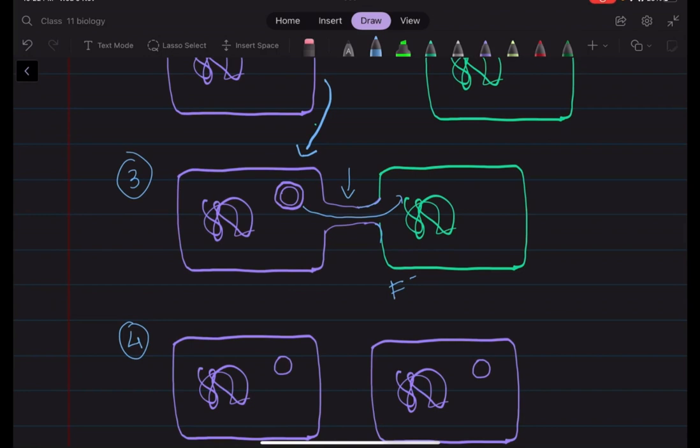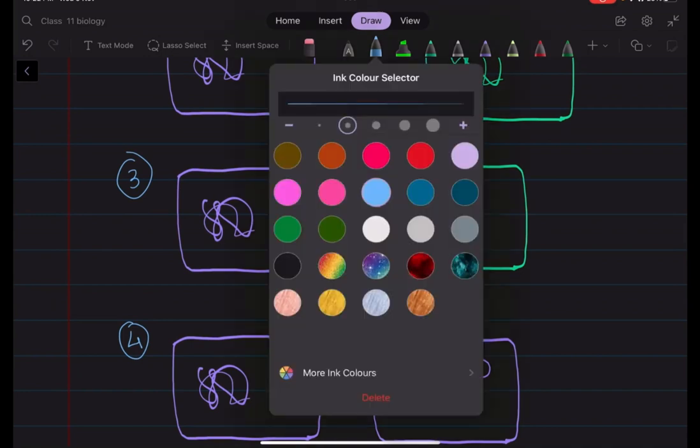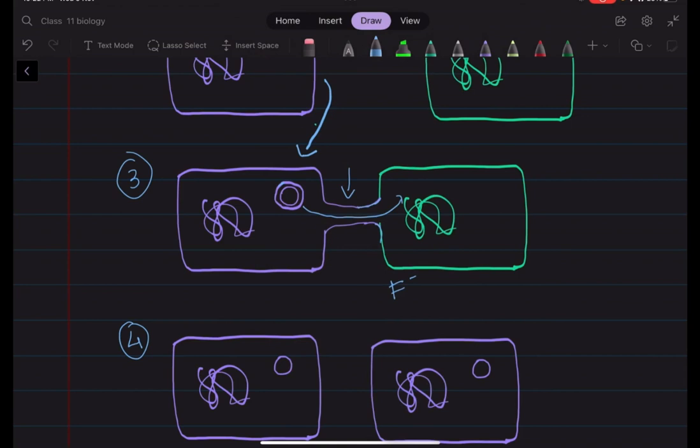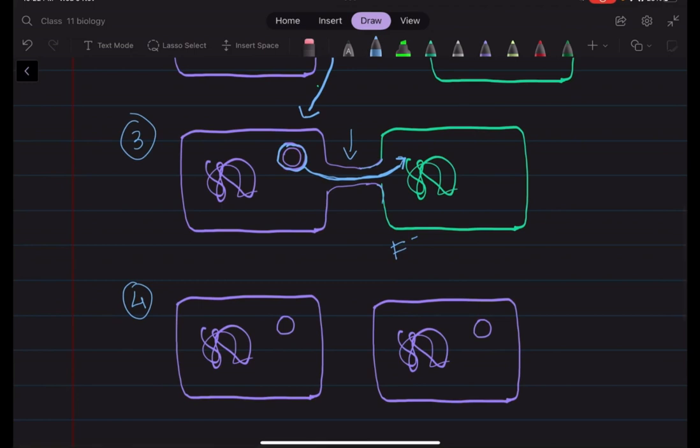So after this, what happens is that, as it has replicated, it has two copies. So there are two copies of the plasmid. So one copy is transferred to the recipient cell.